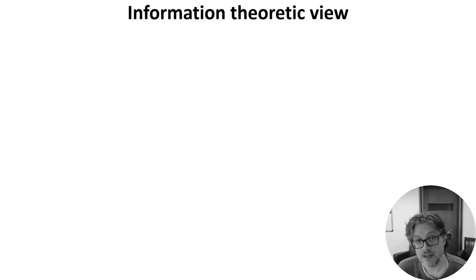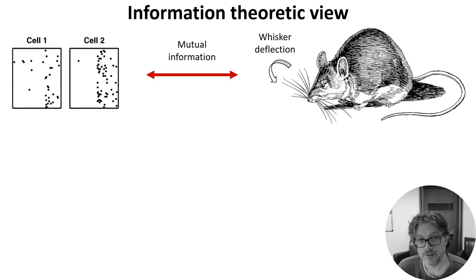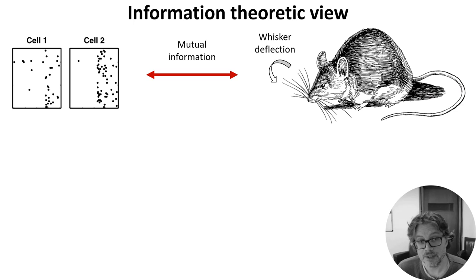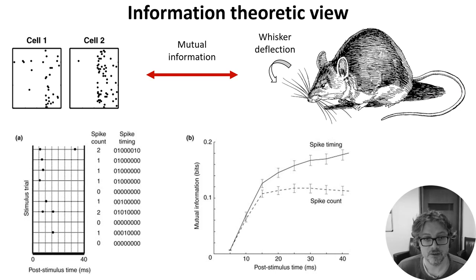Knowing spike times tells you everything there is to know about spike rates, but not necessarily vice versa. Can we quantify that? People have tried using information theoretic approaches. The idea is to record some sensory information — in this case, the amount that a rat's whiskers have been deflected — and simultaneously record the activity of a set of neurons. Then you ask: how much information in bits does knowing the spike train tell me about the whisker deflection? You do this using either the full set of spike times or just the spike rates or counts. Since spike timing tells you the rates, the amount of information must be at least as large — but the finding is that it's much larger. Knowing the spike times tells you almost twice as much as knowing the counts alone.